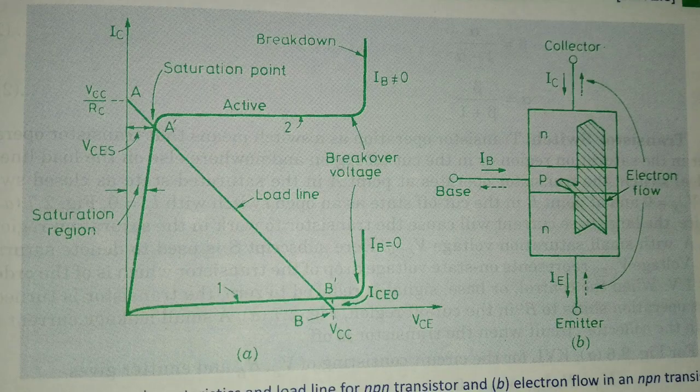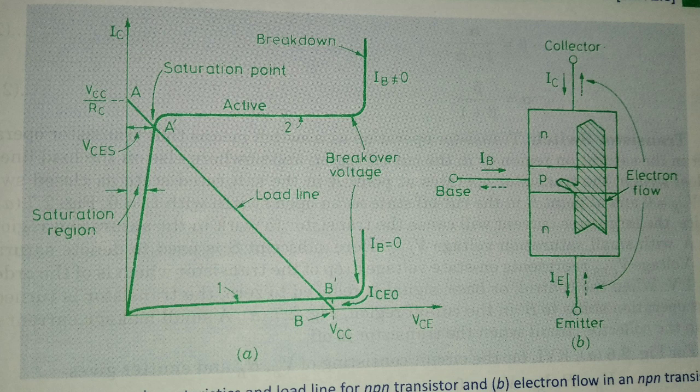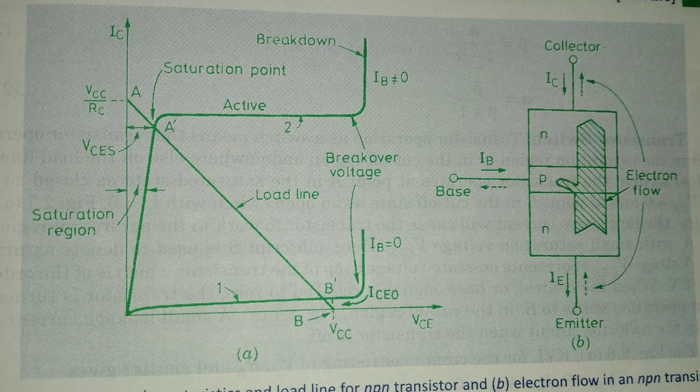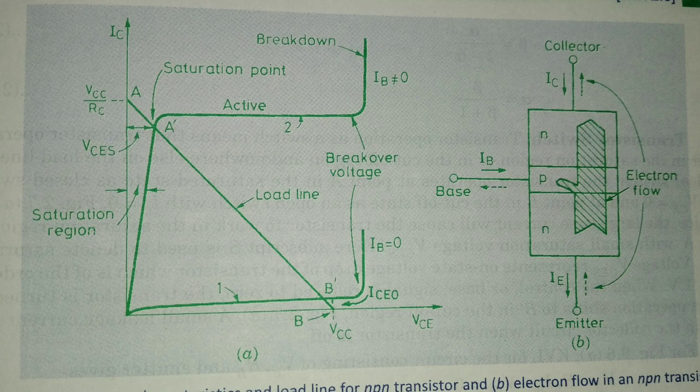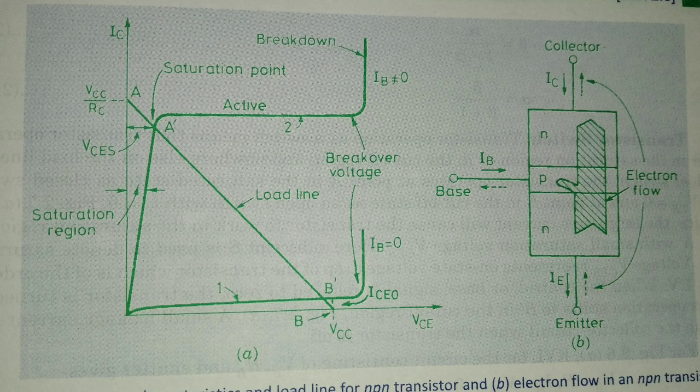First, in the figure we can see if we are going to use transistor operation as a switch, it means transistor operates in either saturation region or in cutoff region. If transistor operates in saturation state, in figure you can see the point A shows the action of closed switch with VCE equal to 0. And in cutoff state, the point B shows action of open switch with IC equal to 0.